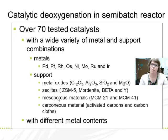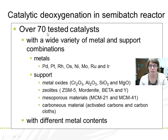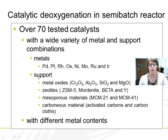When we started this work on catalytic deoxygenation in year 2002, there were only papers on aromatic carboxylic acids such as benzoic acid found in the literature — no papers on linear fatty acid decarboxylation. That is why a huge research effort started. We tested roughly about 70 different catalysts, with different metals and supports. Metals included noble metals — platinum, palladium — as well as nickel, molybdenum, ruthenium, iridium, and osmium. Supports included metal oxides, alumina, silica, magnesium oxide, zeolites, acidic supports, mesoporous materials, and carbonaceous materials, with varying metal contents.